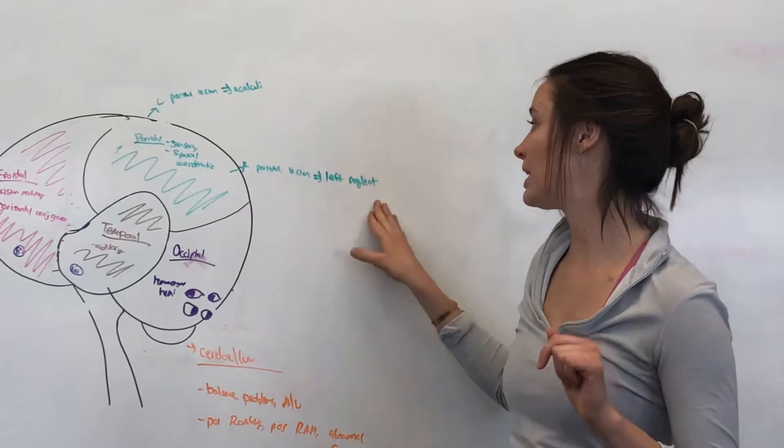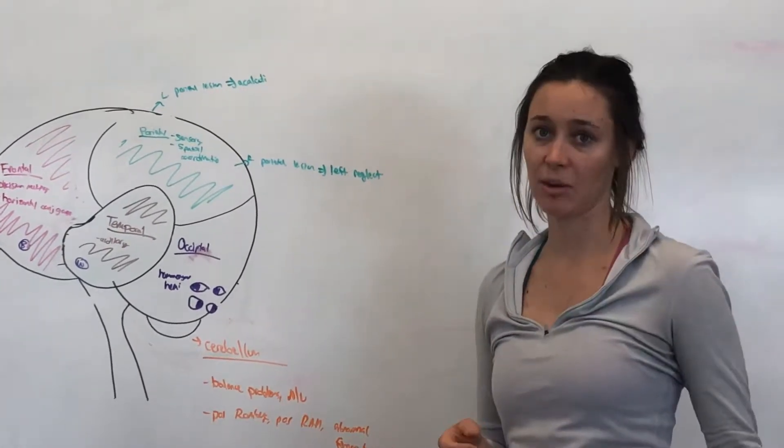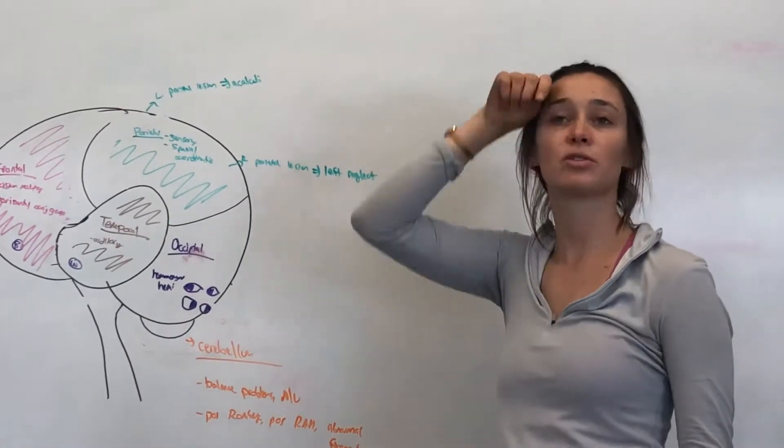Whereas right parietal, kind of a key thing is left neglect. So basically, you neglect the whole left side of your body. Like you go to shave and you only shave like the right side of your face.